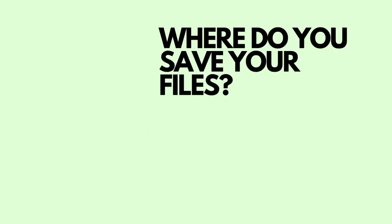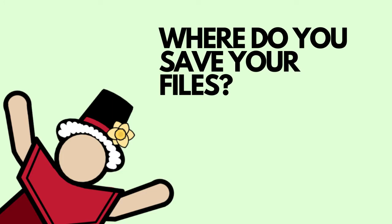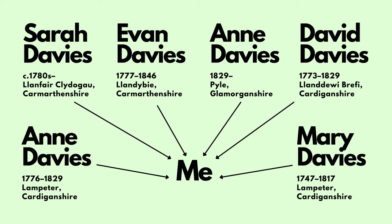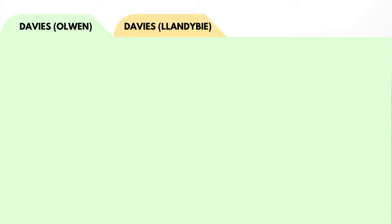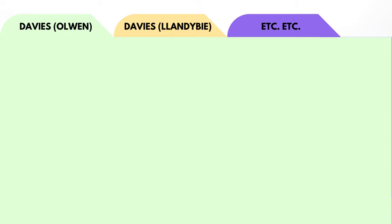Now that we have a name for our files, where do we actually save them? For each of my family lines, I create a separate folder. We're trying to do the same thing that we're doing with each file — naming the folder something that is helpful to us and gives us all the information that we need at a glance. So in my case, with six different Davis lineages that I'm descended from, I include the place that they're from or that I associate them with. With that, I have a Davis Olwen folder and a Davis Sandby folder. And when I find records, I generally just put them all in this main family lineage folder.